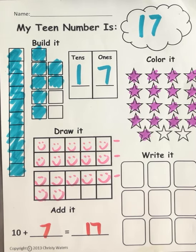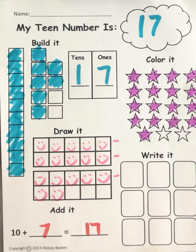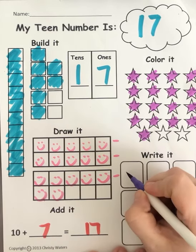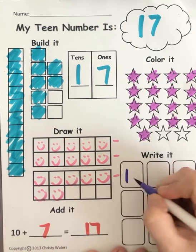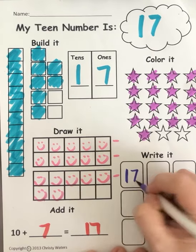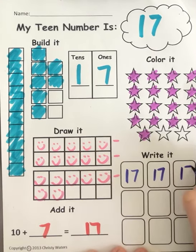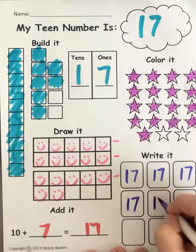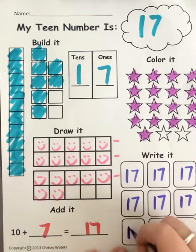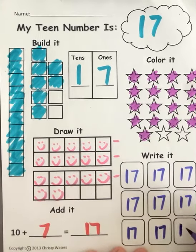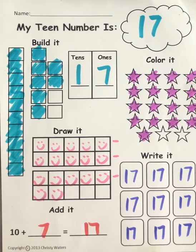Next we are going to write our 17. Can you help me? I need to write what number first? A 1 and then a 7. 1, 7 — 17 is 17. A 1 and a 7 is 17. You got it!